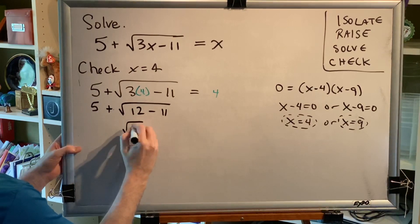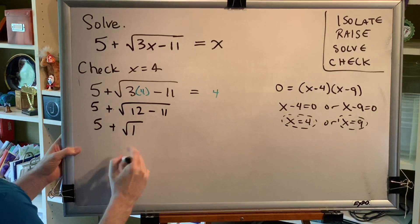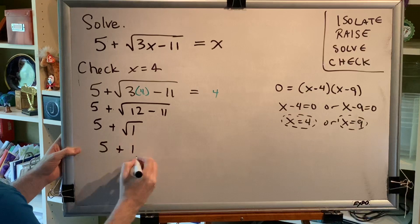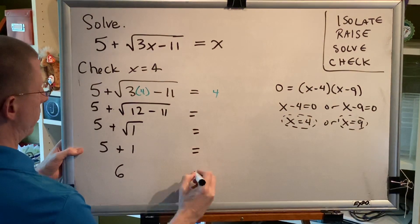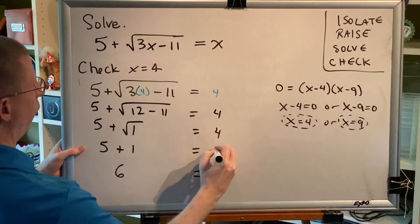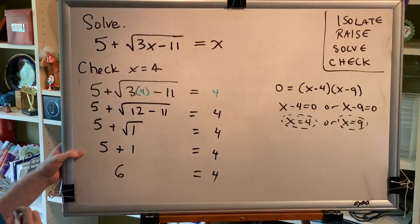12 minus 11 is 1. The square root of 1 is 1. And 5 plus 1 is 6. So the left side of this equation is 6. The right side is 4. Do those match?